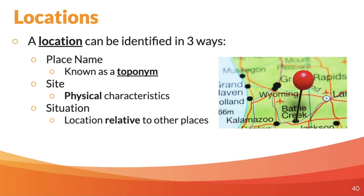Locations can actually be identified in three ways. One is through a place name. A place name, like Crown Point for example, is what's called a toponym. Toponym is the actual technical term for place name. Toponyms come from all sorts of different origins, and you can see in this map over here, which is very zoomed in — what we call large scale — we're very zoomed in on this particular map.